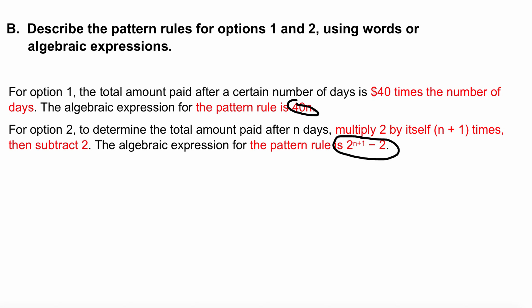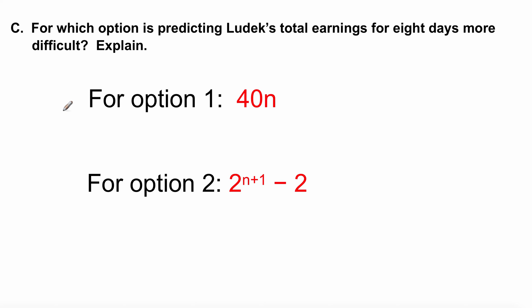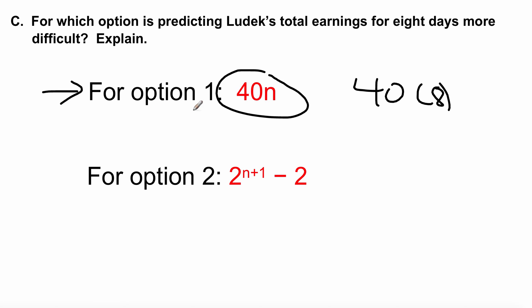Now, the next question I asked you is, for which option is predicting Ludek's total earning for eight days more difficult? Explain. It's a simple explanation. If you're looking at this option here, it's 40 times eight. And the second one is a lot more complicated, because you are placing your variable in where the N is right now. And I'm going to go through that in just a couple of seconds after we talk about the graph. But a long story short, and to make a simple answer, your best bet is option one, just because it's easier.